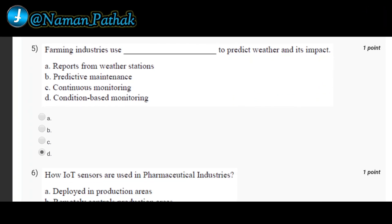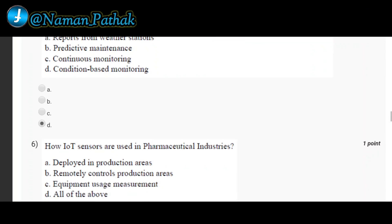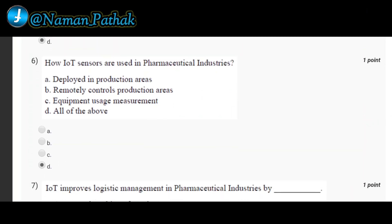Our fifth question is farming industries use dash to predict weather and its impact. Correct option is D, condition based monitoring. Our sixth question is how IoT sensors are used in pharmaceutical industries? Correct option is D, all of the above, that is deployed in production areas, remotely controls production areas equipment uses measurement.